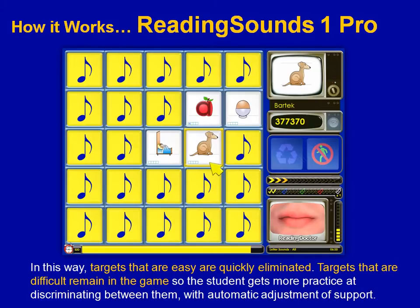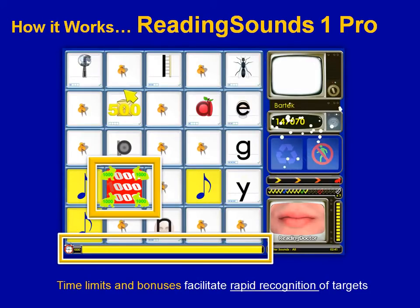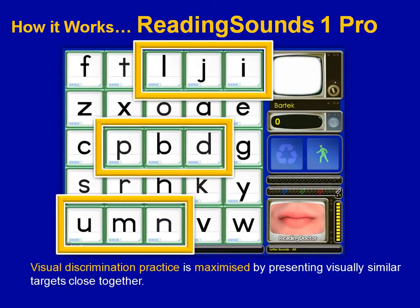Notice that it doesn't matter whether the student confused the target as a consequence of a visual confusion or an auditory confusion. Time limits, animations, and bonuses during the program encourage the student to provide rapid automatic responses. In addition, targets are presented according to visual similarity groups to give the student lots of practice in discriminating between visually similar targets.